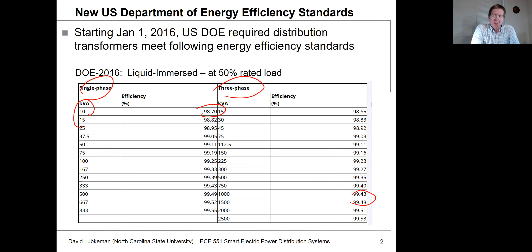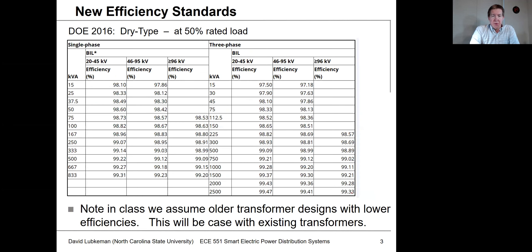What these energy efficiency standards are designed to do is basically result in a fleet of utility transformers where the losses aren't as high. That means we don't have to have as much generation and cost associated with serving load. These are the values for liquid-immersed transformers.